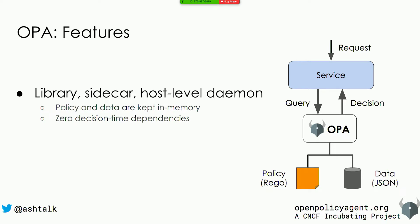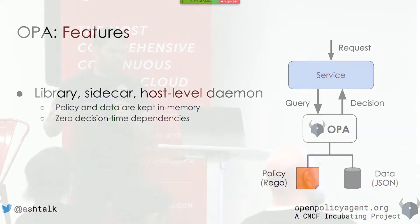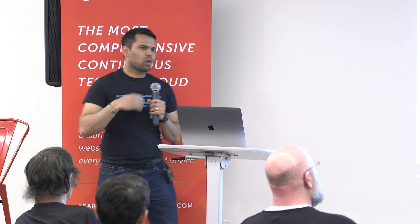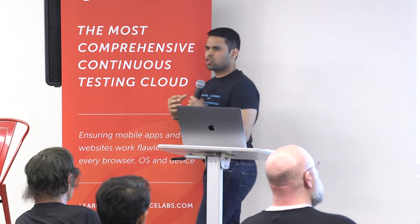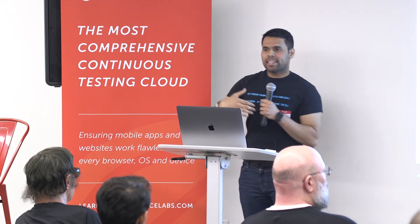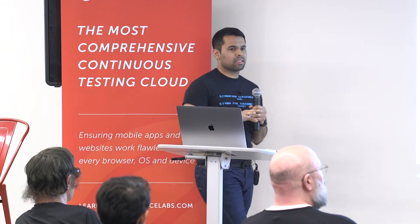OPA is written in Go. You can embed it as a library, deploy it as a sidecar or a host-level daemon. It's designed to be as lightweight as possible, so all the policies and data it needs for evaluation are stored in memory. You can think of OPA as a host-level cache for your policy decisions — your OPA and your service run on the same machine, giving you low latency on the request path as well as high availability. Once OPA is deployed, it has no runtime dependencies and does not need to talk to any external service or database to make a decision. You can, however, extend OPA to talk to an external server to fetch policy and data, but that's completely optional.